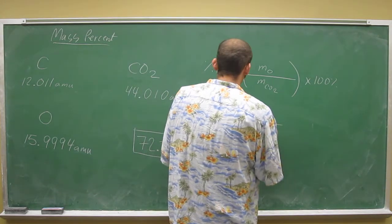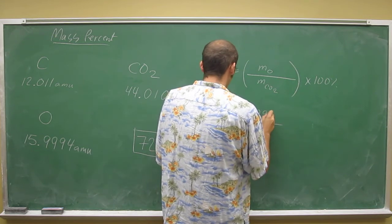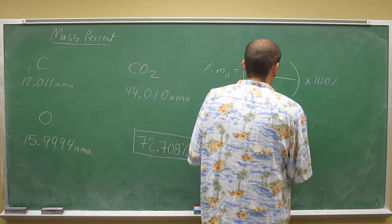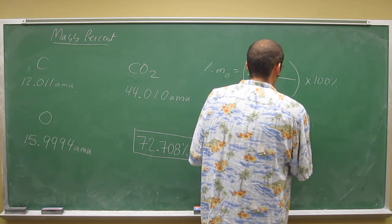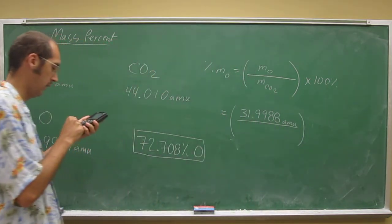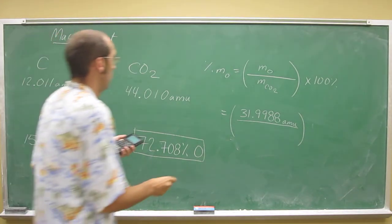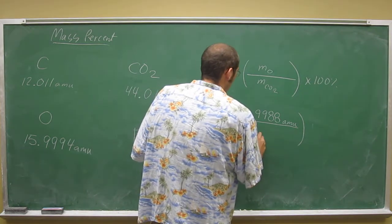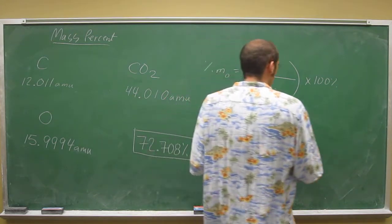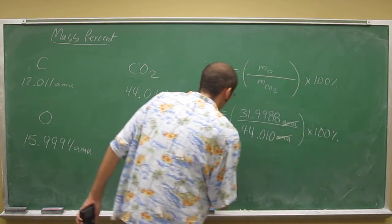So we get 31.9988 amu divided by 44.010 amu. Okay, and then the amu's will cancel. Multiply that by 100% and your units will be percentage.